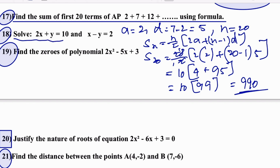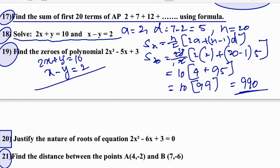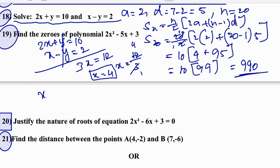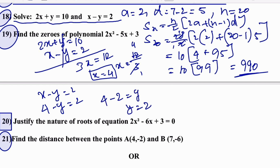Solve: 2x + y = 10 and x − y = 2. Adding both equations: 3x = 12, so x = 4. Substituting x = 4 into x − y = 2: 4 − y = 2, so y = 2. We get x = 4 and y = 2.